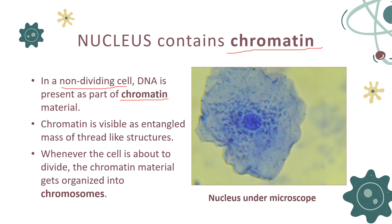लेकिन जब cell divide करने वाला होता है — when cell is about to divide — this chromatin gets organized. A loose thread-like structure gets condensed and organized to form a chromosome-like structure. And this chromosome is visible through the compound microscope. This is an image of nucleus under microscope, taken from a human cheek cell.